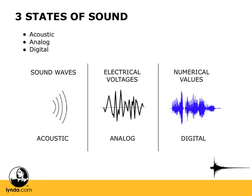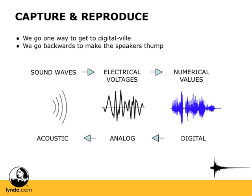So if these are the three states of sound, what we want to do is be able to get sounds from the first two — from acoustic and analog — into the digital world so that we can work with digital audio. Here we can see we want to take the sound out around us, the sound of a snare drum, pick it up with a microphone which converts it into electrical voltages, and then convert it via our analog-to-digital converters into numerical values that our computer can work with. Once it's in that digital stage, we can do things like edit it on our computer, add effects — everything you do when you're working with audio on your computer.